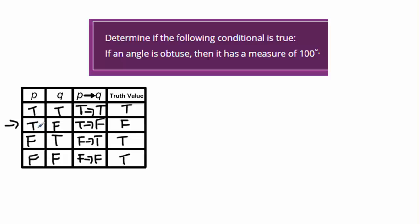I'm going to evaluate it when the hypothesis is true. Here it says if an angle is obtuse. So let's consider that I have an angle that's obtuse. What does that tell me about my conclusion? Does that mean the measure will be 100 degrees?